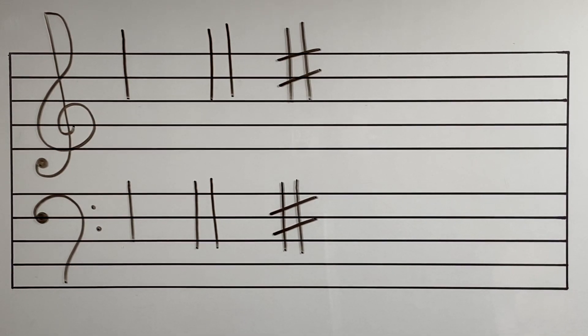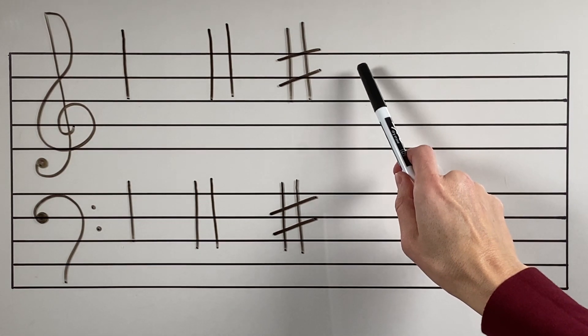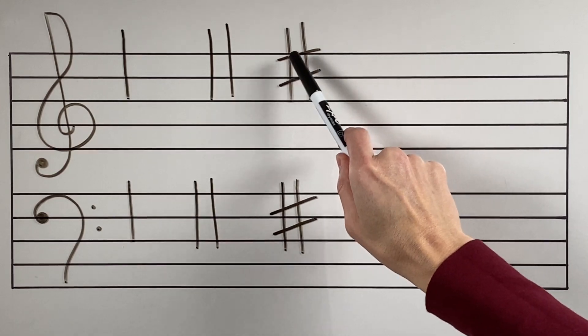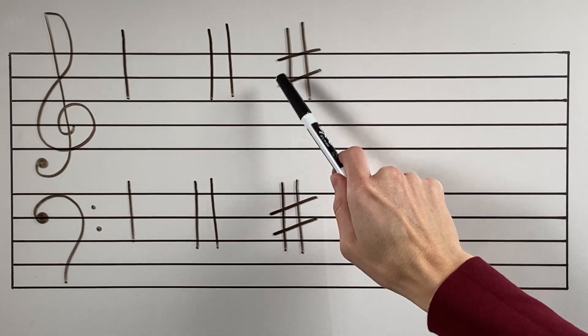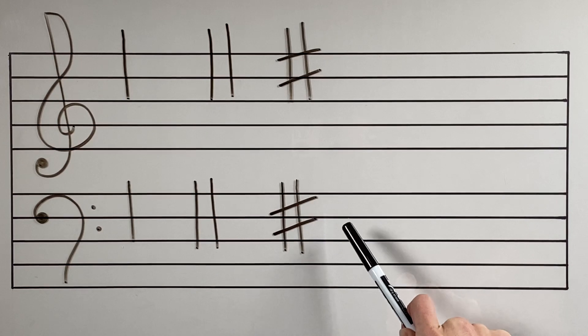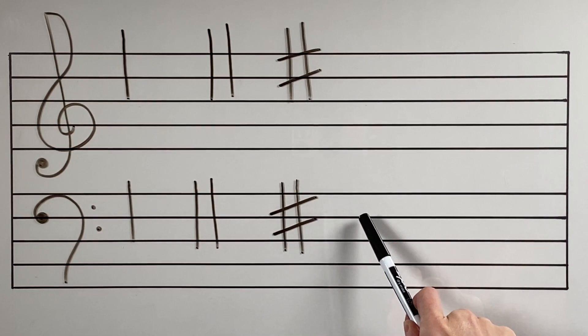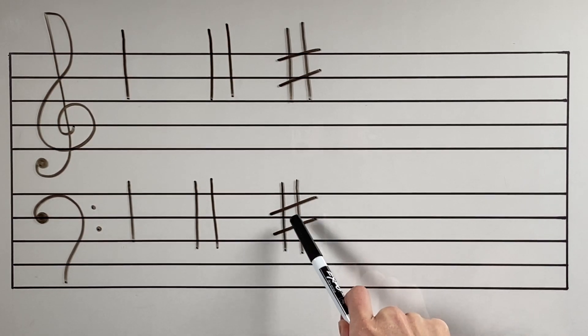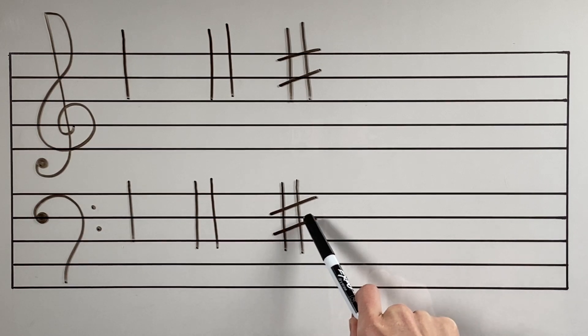This is where it's different for a line note and a space note. If I want a space note to be sharped I have to make sure that the middle of my tic-tac-toe board is on the space so I'm going to do line and line. If I want a line note to be sharped I have to make sure that the middle of my tic-tac-toe board has the line going right through the middle.